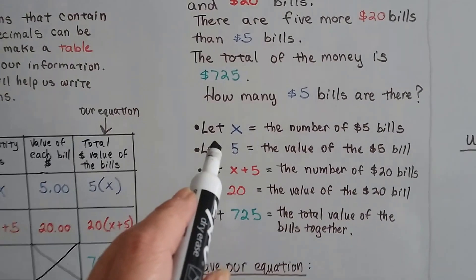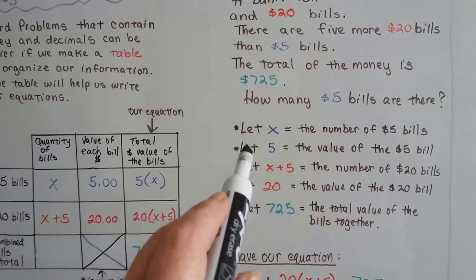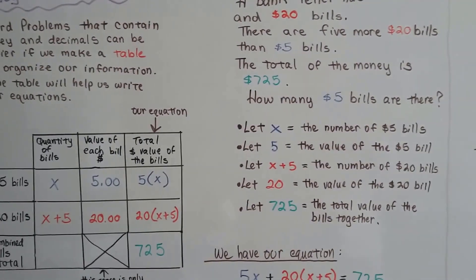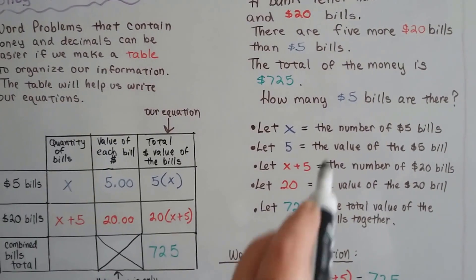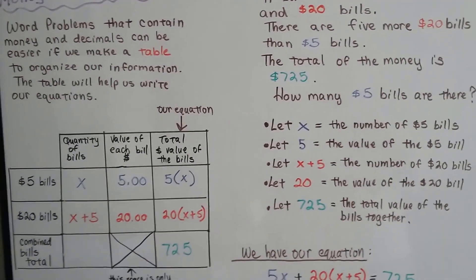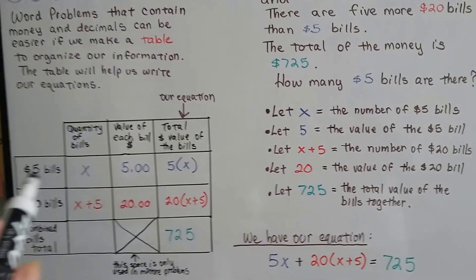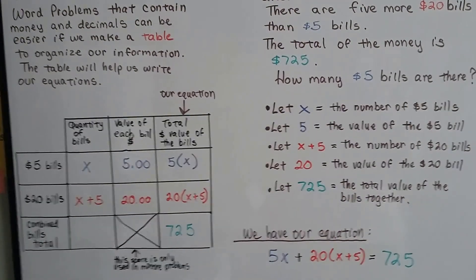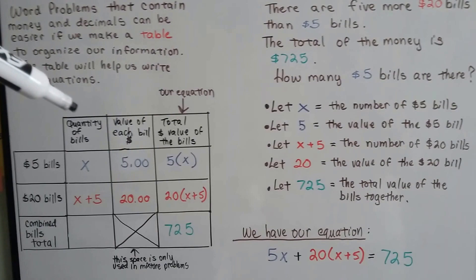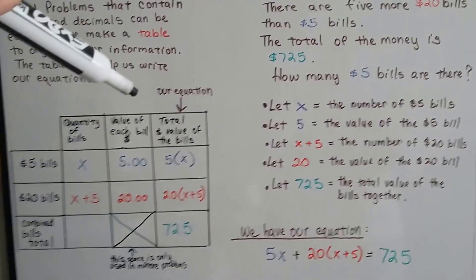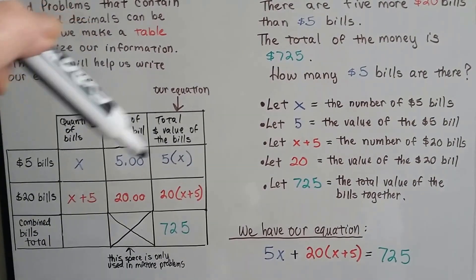We're going to let X be the number of $5 bills, and that's what we're looking for. We're going to let X be the quantity of $5 bills. We've got our table set up for the quantity of the bills, the value of the bills, and then the total dollar value of the bills.